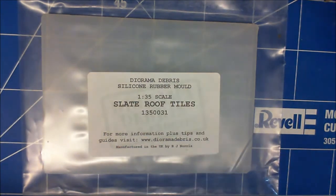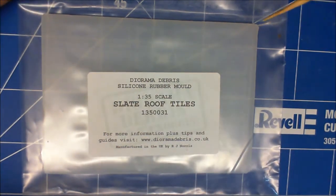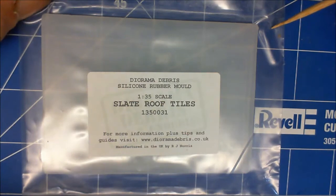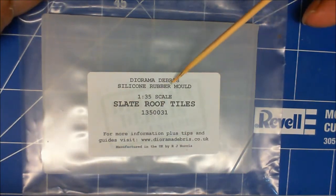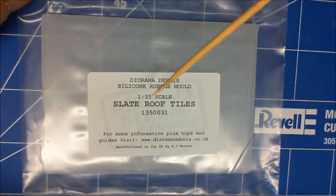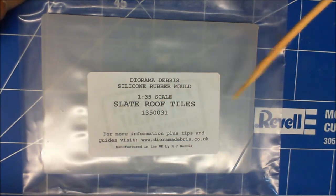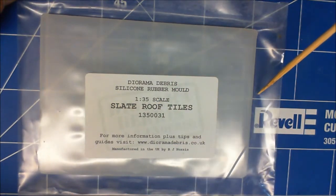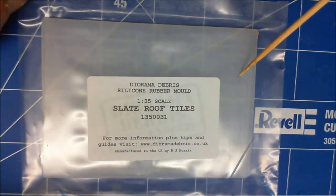So now we're going to take a look at this mould today. This is from Diorama Debris. It's a silicone rubber mould. It's 1:35th scale and it is a slate roof tile and the mould reference number for it is 1350031.